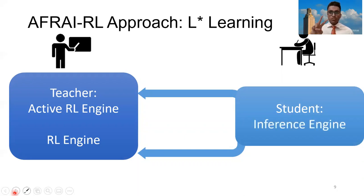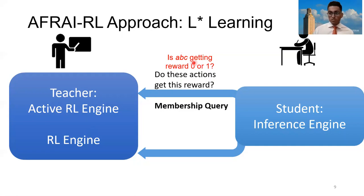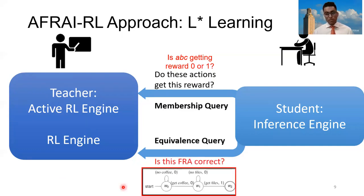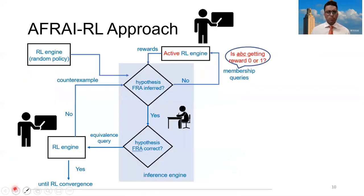The inference engine can ask one of two questions. The first is called a membership query — it asks: do these actions get me this reward? For example, does going to A, then B, and then C, get me a reward of zero or one? The second question is called an equivalence query. The student can infer a finite reward automaton and ask the teacher: is this the correct reward automaton? Does it encode the MDP reward function? The teacher can answer yes or no. Let's get a more granular view by moving to this diagram.